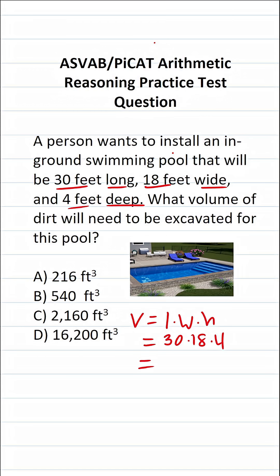On the ASVAB and PiCAT, you don't get a calculator, so you want to solve these questions as efficiently as possible. I'm going to do 30 times 4 to get started because I know 3 times 4 is 12. 30 times 4 is 120. So this becomes 120 times 18.